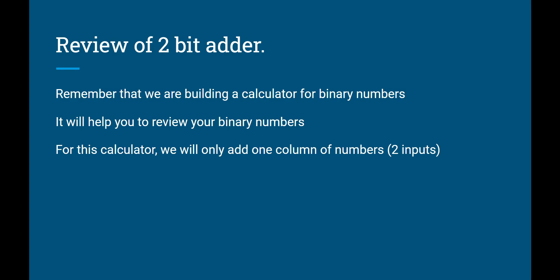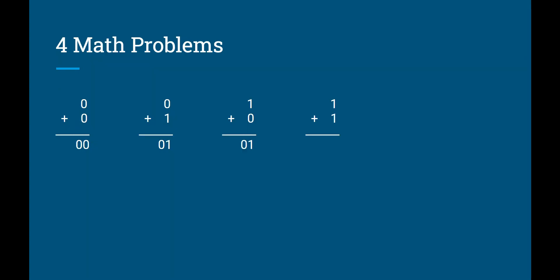So let's really quickly review the 2-bit adder. Again, it is a calculator. And for this calculator, we are going to add one column of numbers. So here we see 0 plus 0 is 0, 0 plus 1 is 1, 1 plus 0 is 1, and 1 plus 1 is 10. Because remember, this is binary.